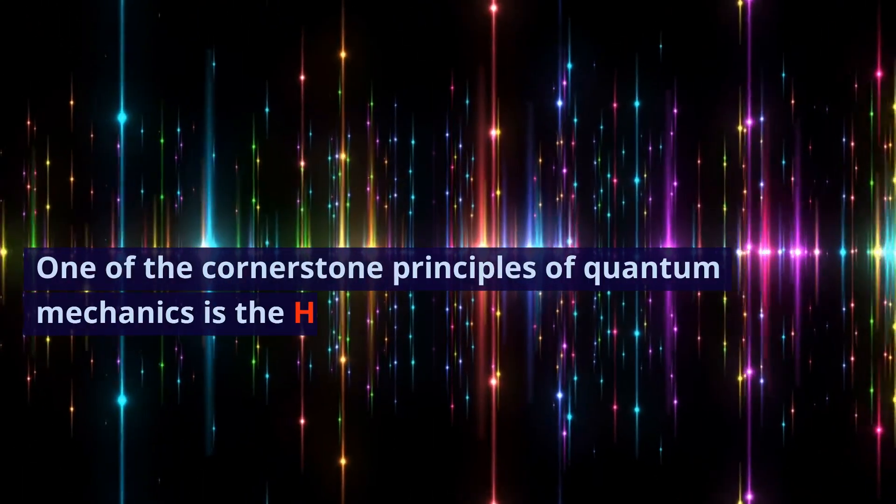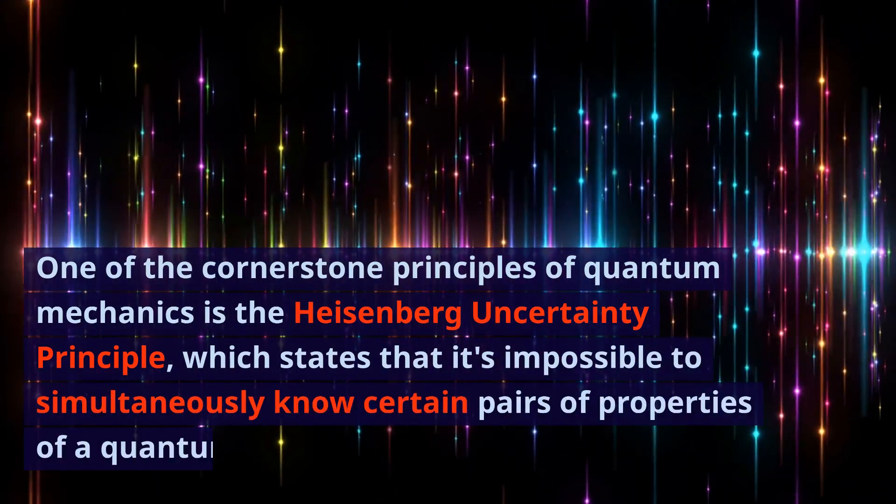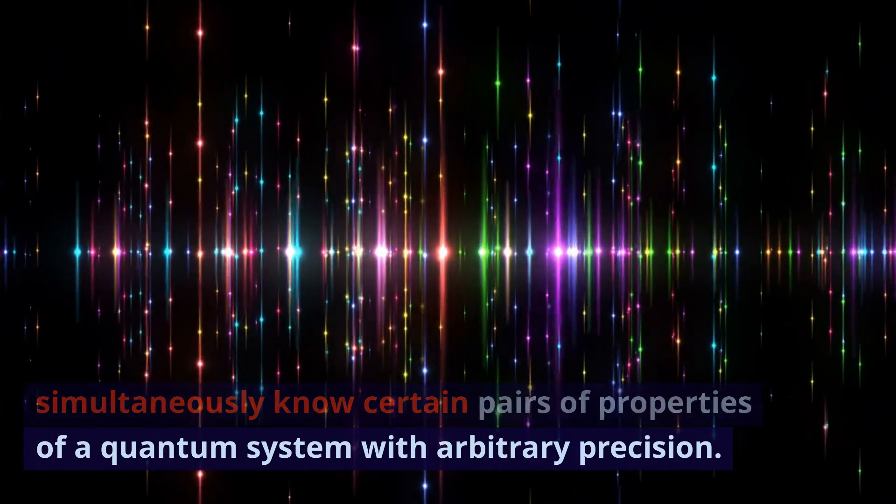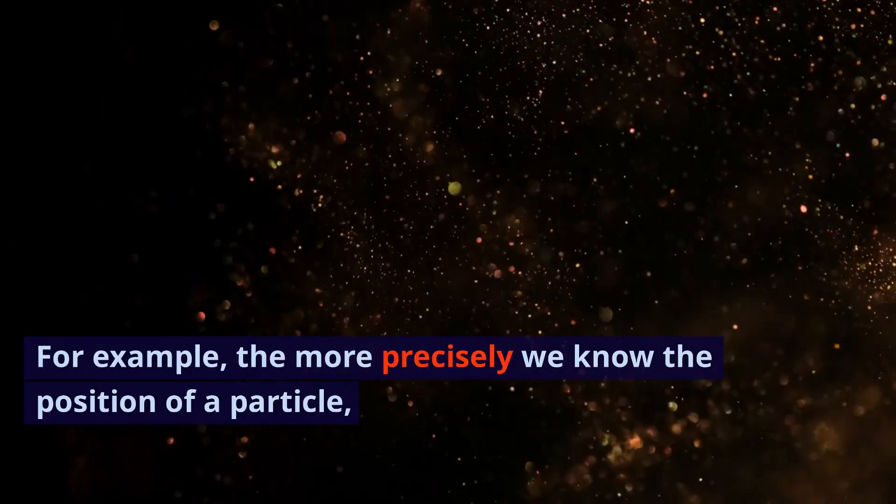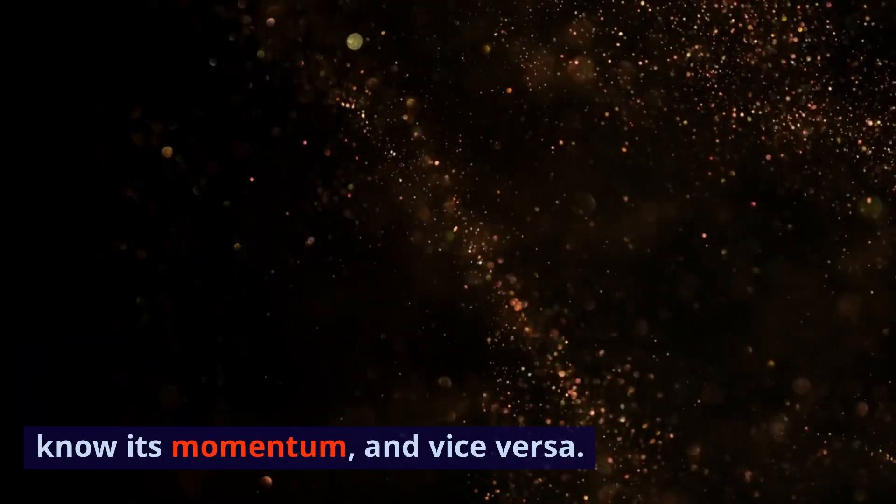One of the cornerstone principles of quantum mechanics is the Heisenberg uncertainty principle, which states that it's impossible to simultaneously know certain pairs of properties of a quantum system with arbitrary precision. For example, the more precisely we know the position of a particle, the less precisely we can know its momentum, and vice versa.